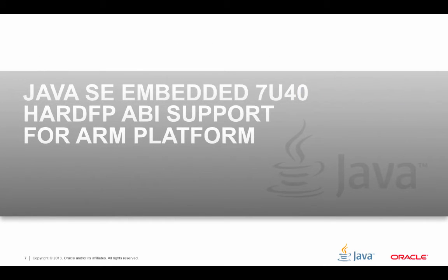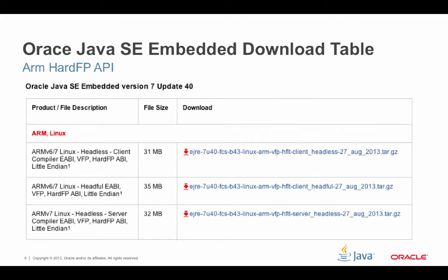So what's the announcement today? Java SE Embedded 7U40 now has full support for hard FP ABI for the ARM platform, versions 6 and 7. If you look at the download page, you'll see the Oracle Java SE Embedded version 7 Update 40. The first three entries are for ARM 6 and 7, and the last one is for ARM 7. These cover headless, headful, and server environments. In all cases, they will use the hard FP ABI.